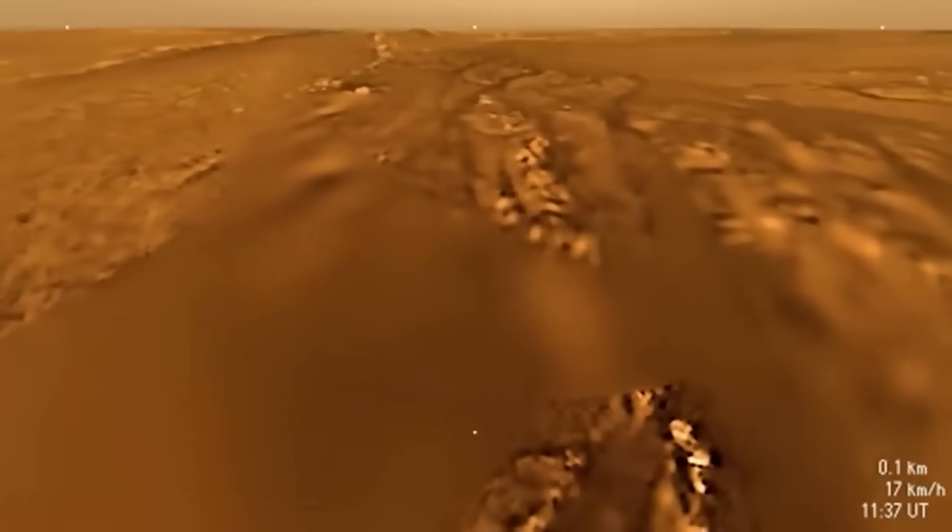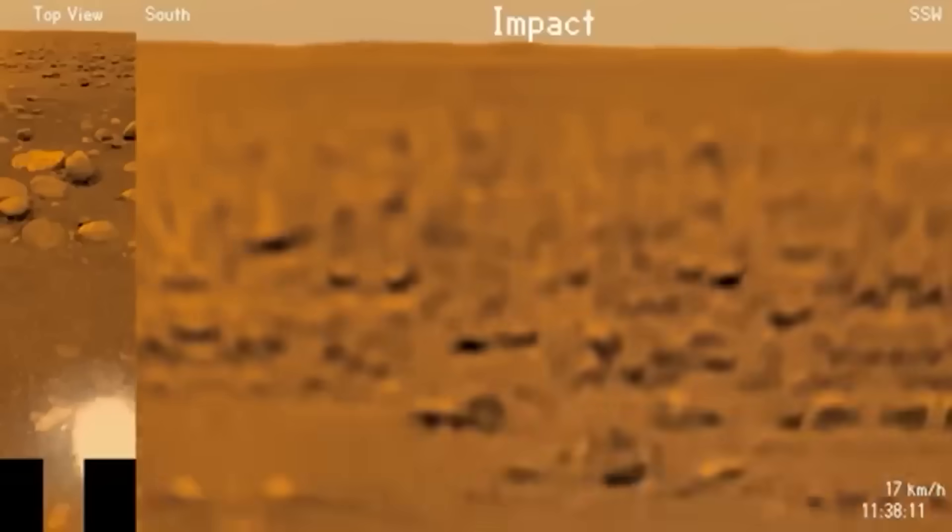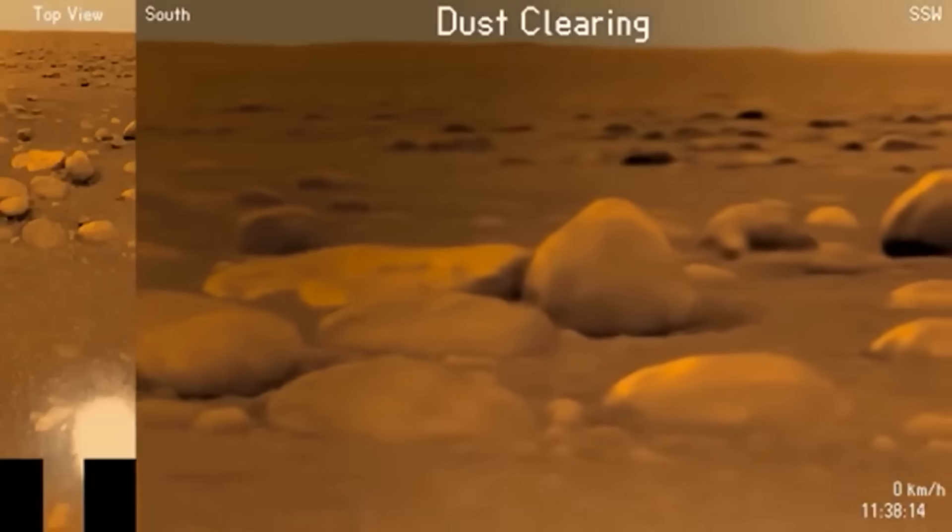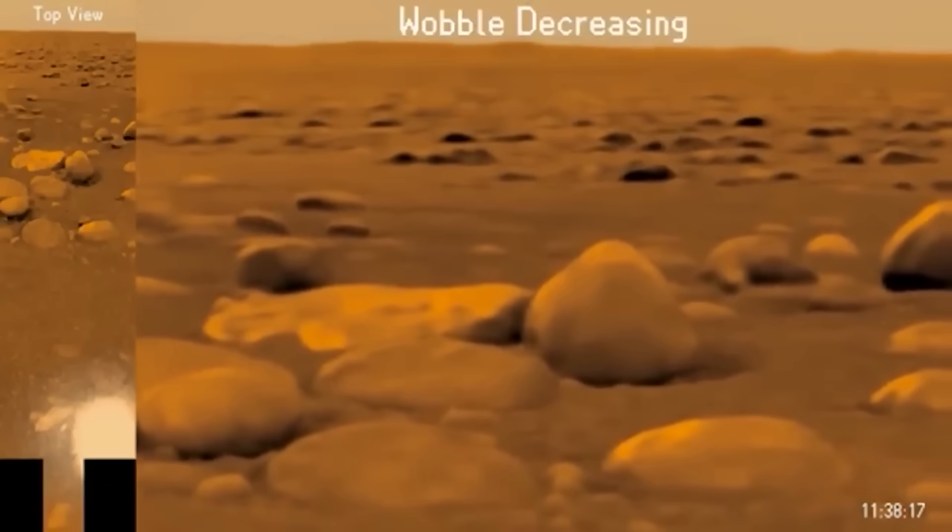When Huygens makes contact with the surface, it makes a dent 12 centimeters deep. It bounces and then slides about 30 to 40 centimeters across the ground before wobbling a few times and coming to a rest.